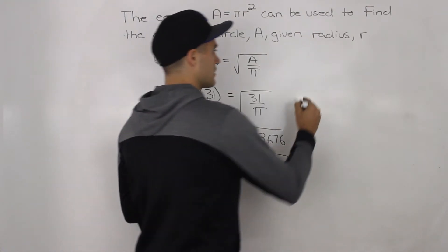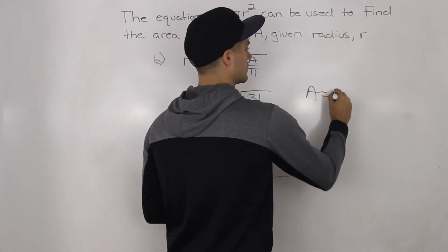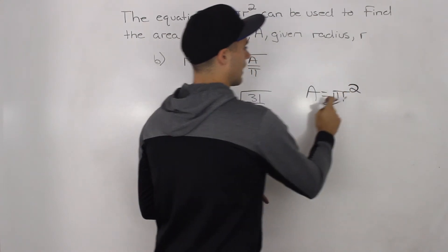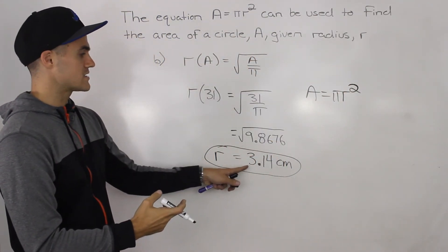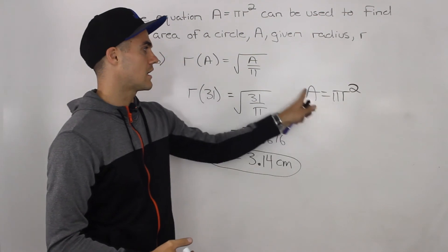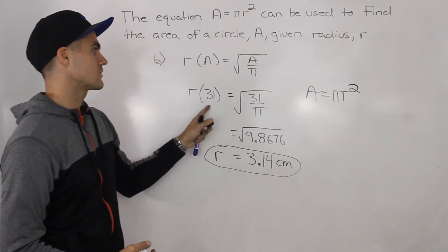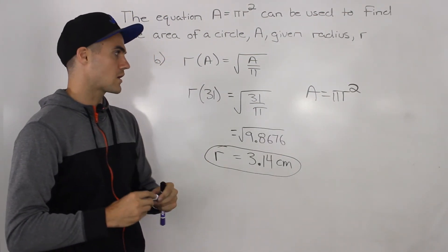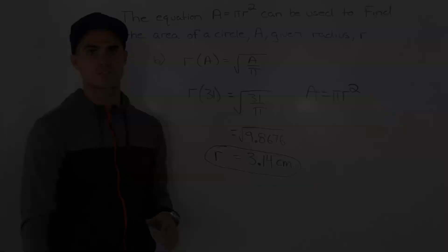And you can always check it with the regular area of a circle formula. You could just plug in that radius that you got here, and make sure that you get an area that's really close to 31 centimeters squared. And then you know you got the correct answer.